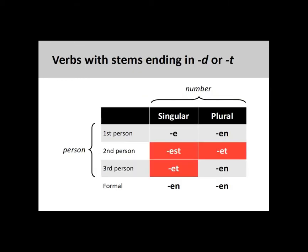Some regular verbs have a stem that ends in D or T. When this is the case, we change the conjugation pattern slightly by adding an E before the second and third person singular, as well as second person plural verb endings. These exceptional endings are marked in red on the screen.